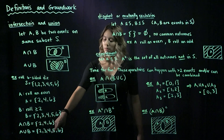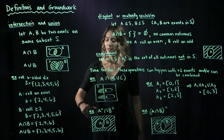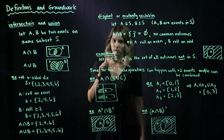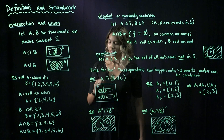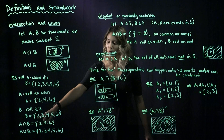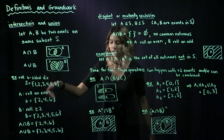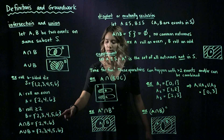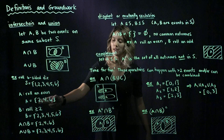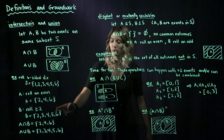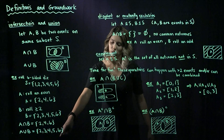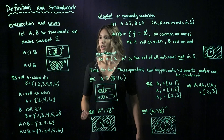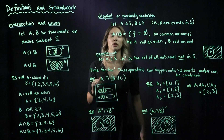For A union B, we take all elements in A and all elements in B, listing each one once. Starting with B, we have 2, 3, 4, 5, and 6. Then we check what's in A that wasn't already in B — in this case, nothing more to add. So A union B is {2, 3, 4, 5, 6}. That's intersection and union.